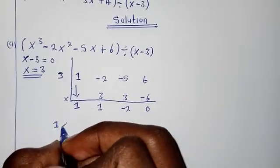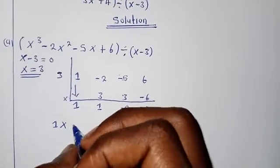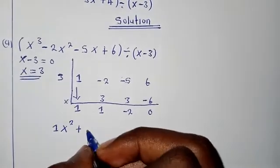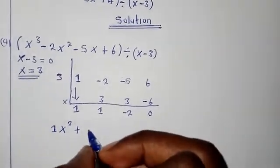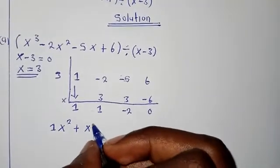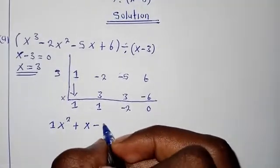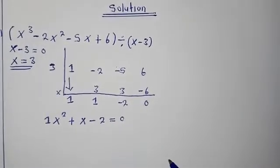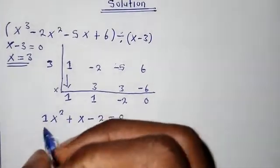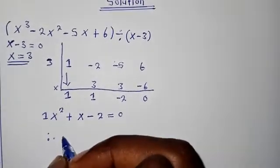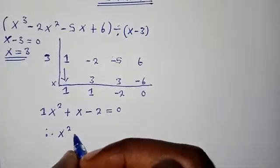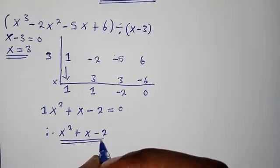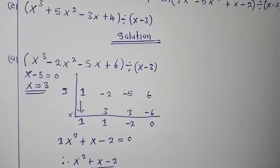The coefficient was 1 so we have x squared, then plus since the next coefficient is positive 1 we have plus x, and since the last coefficient is negative 2 we have minus 2. Set equal to zero gives x squared plus x minus 2 equals zero, but since they asked us just to divide, the final answer is x squared plus x minus 2.